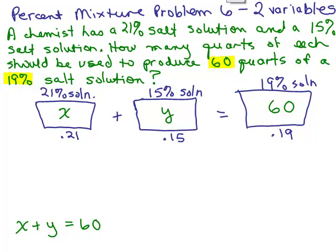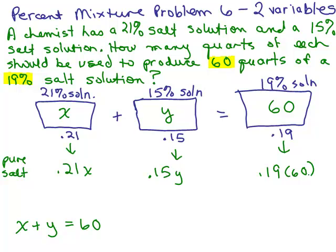Now what about the amount of salt in each of these solutions? Well, if it's a 21% salt solution, what it means is that 21% of what's in there is pure salt. So the pure salt in this first vat is .21X. The amount of pure salt in the second solution is .15Y and the amount of salt in the final solution is .19 times 60. Now if you pour these two solutions together, the amount of salt that were in the two solutions, the pure salt of each is the same as the pure salt in the final solution. So this is the other equation. So I have a system of equations. I have .21X plus .15Y equals .19 times 60 and I also have X plus Y equals 60.